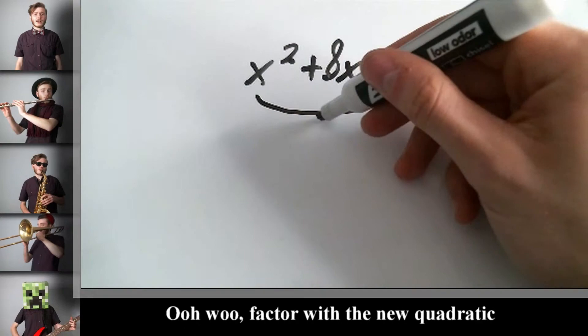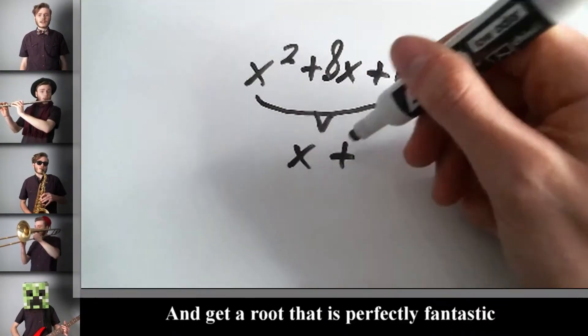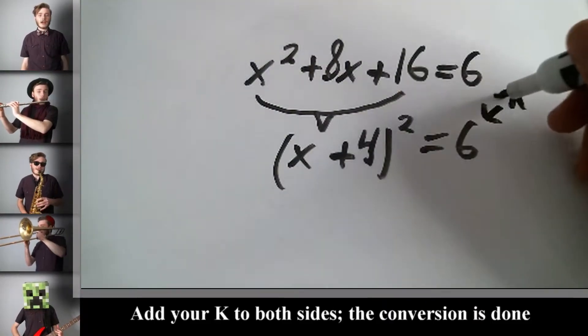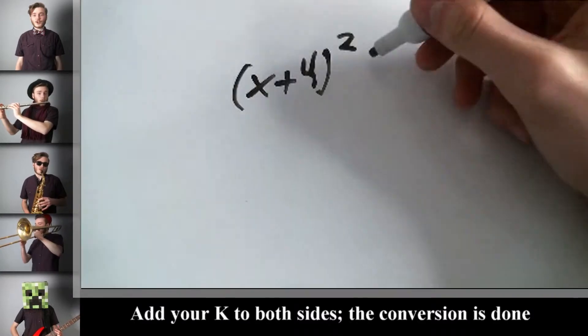Factor with a new quadratic. Get a root that is perfectly fantastic. Add K to both sides, the conversion is done.